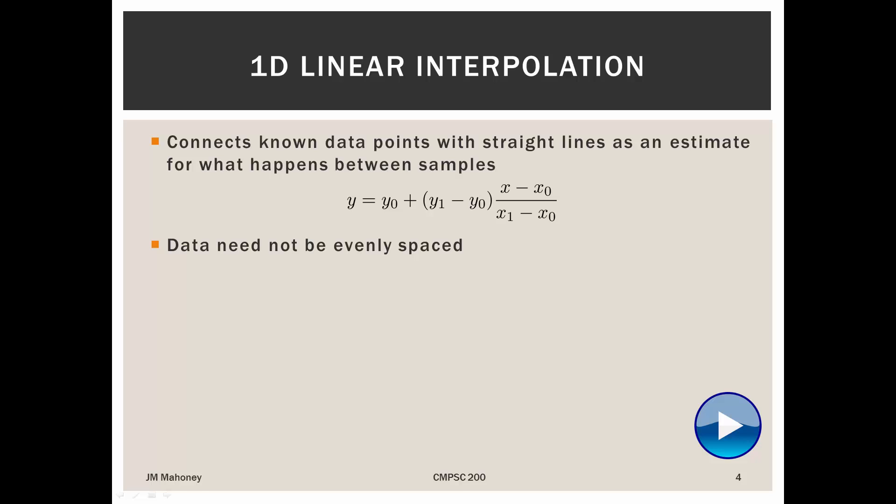So looking at this formula here, if we wanted to know at 1.7 minutes what's happening, the x value would be 1.7, our x naught value would be 1, and the x1 value would be 2. The naught values are the value to the left, the 1 values are the value to the right.